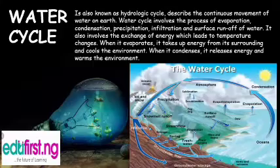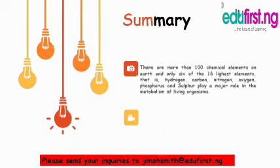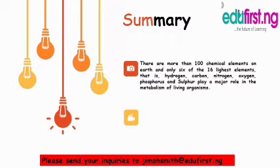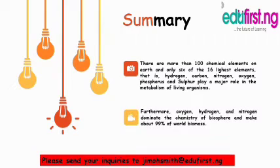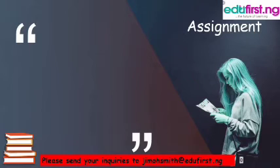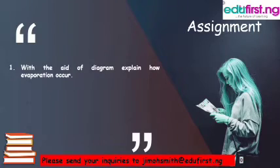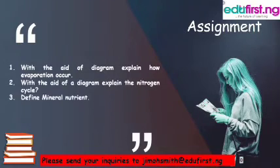In summary, there are more than 100 chemical elements on earth, and only six of the 16 lightest elements — hydrogen, carbon, nitrogen, oxygen, phosphorus, and sulfur — play a major role in the metabolism of living organisms. There is also a phosphorus cycle, which will be treated in subsequent classes. Furthermore, oxygen, hydrogen, and nitrogen dominate the chemistry of the biosphere and make up about 99% of world biomass. That's it for nutrient cycling — make sure you get back to us with your assignment answers. Thank you.